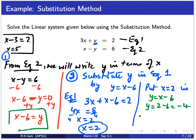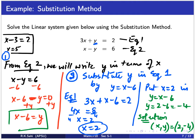So the solution is the ordered pair (x, y) where x is 2 and y is -4. This is exactly what we started with — we said (2, -4) is a solution to this linear system, we verified it, and now we used the substitution method to actually find it. Let's do some more practice problems.